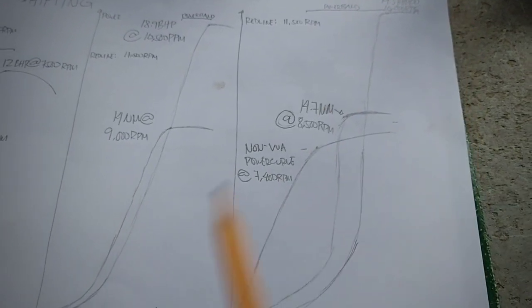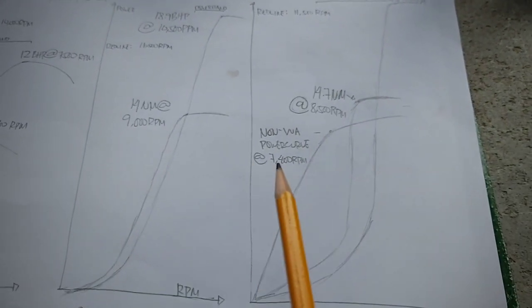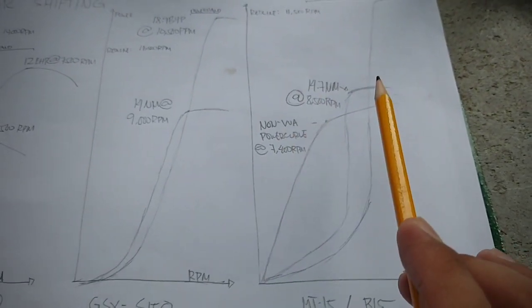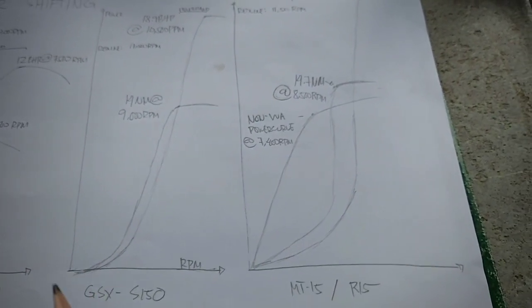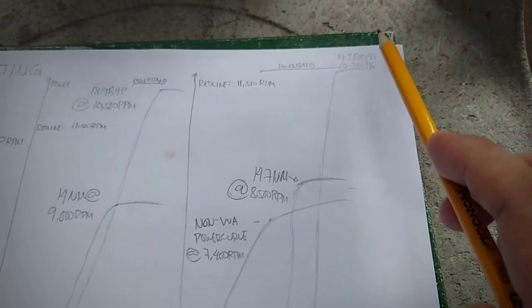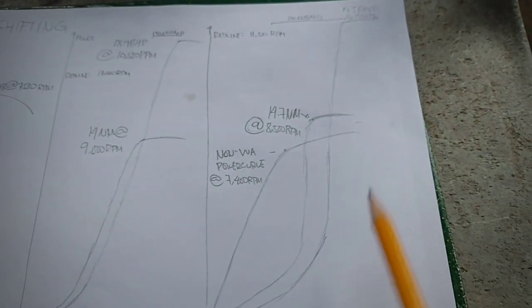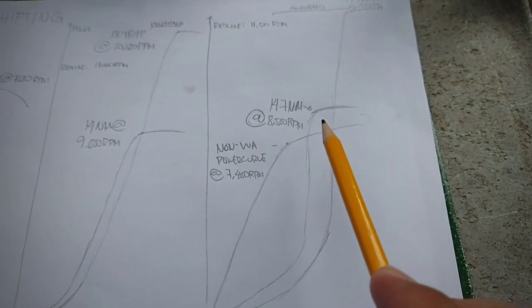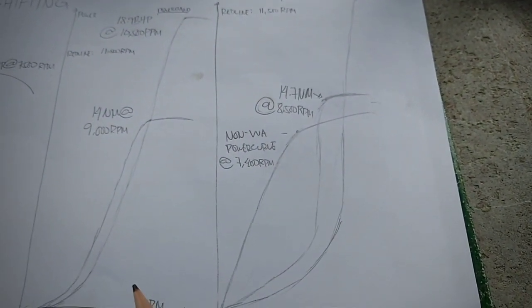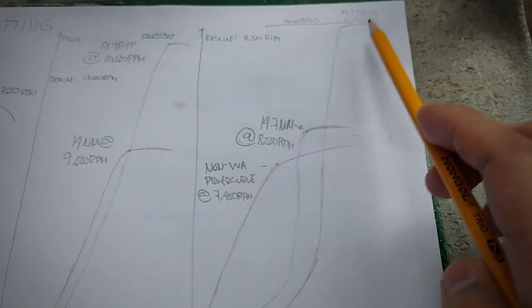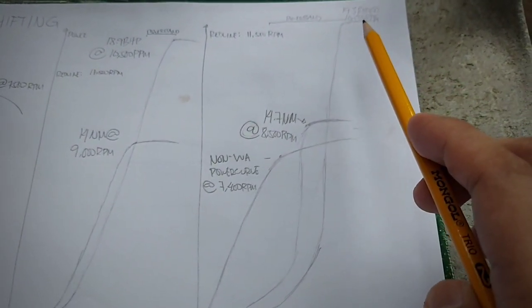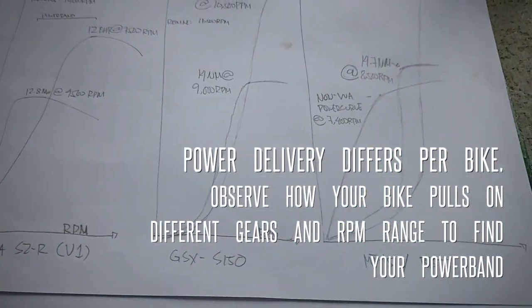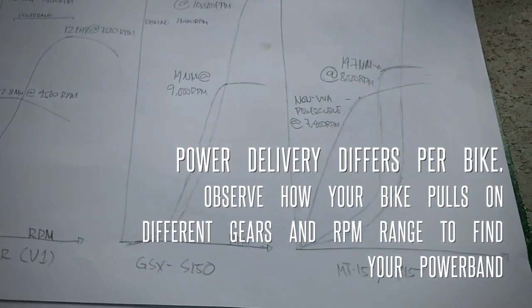Samantala, para sa VVA bikes gaya ni MT-15, below 7,400 RPM, since optimized yung cam lobe niya for low RPM, may hatak siya. All the way to 10,000 RPM in which gagana yung big cam lobe through VVA. Since optimized siya, meron tayong power curve mula sa baba hanggang sa pinakataas ng RPM range natin. So which means, si MT-15 at si SZ ay mas drivable kumpara kay GSX sa traffic.